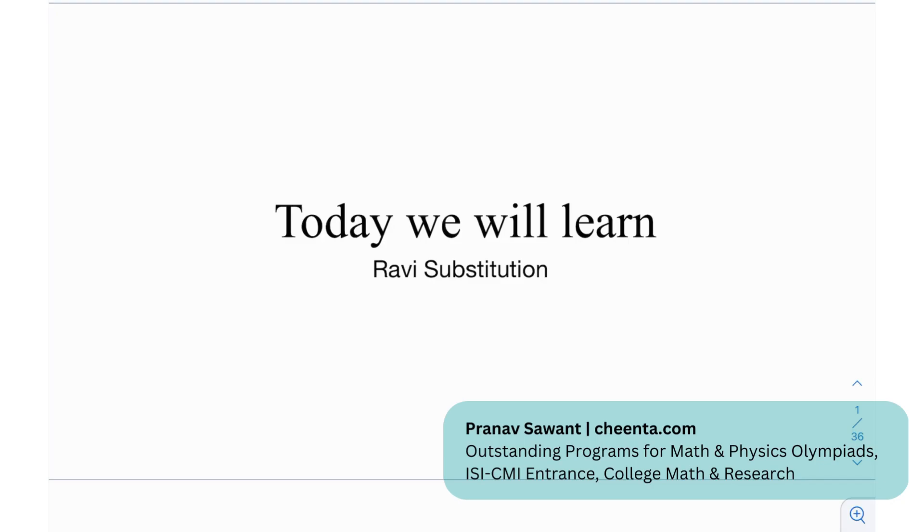Hi everyone, so today I'm going to demonstrate a very simple yet powerful technique in Olympiad inequalities, and that is called Ravi substitution. This is another thing that you can have in your problem solving toolkit, and if you do this, a lot of these Olympiad inequalities can just reduce down to very simple terms. So yeah, let's see how this works.